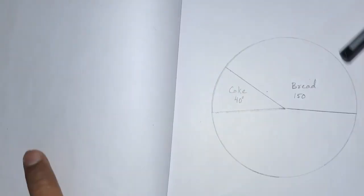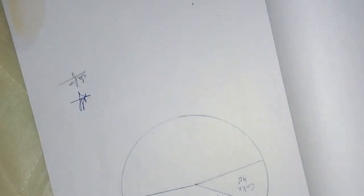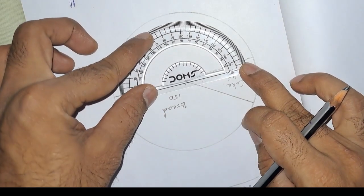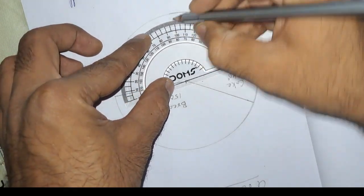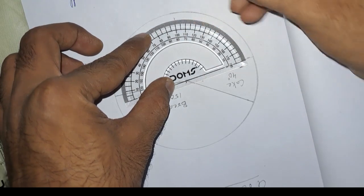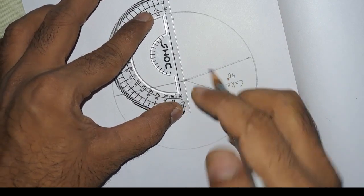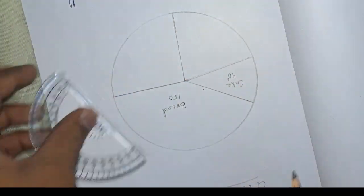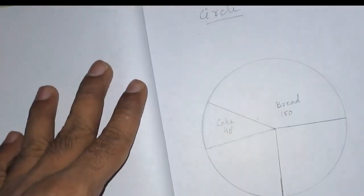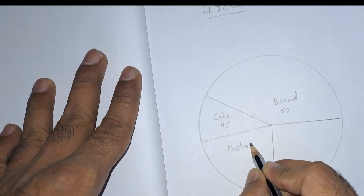Next is pastries, 80 degrees. Let us draw that. It is 80 degrees, pastries.